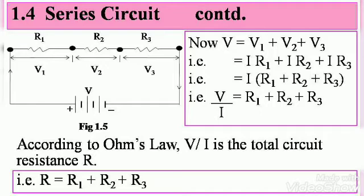Now V equals V1 plus V2 plus V3. We noted that for a series circuit, the total voltage drop is the sum of the voltage drops across each resistor.